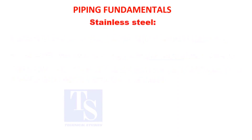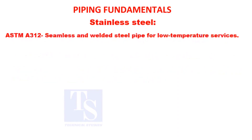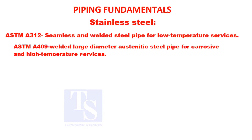Stainless steel ASTM A-312: seamless and welded steel pipe for low temperature services. ASTM A-409: welded, large diameter, austenitic steel pipe for corrosive and high temperature services.